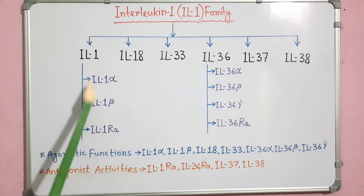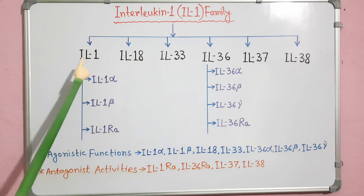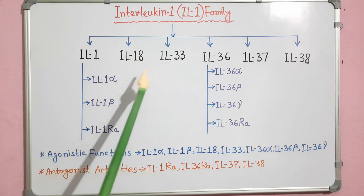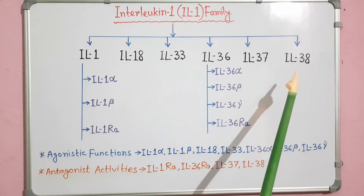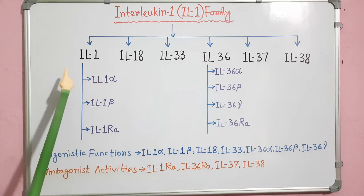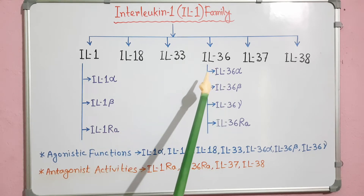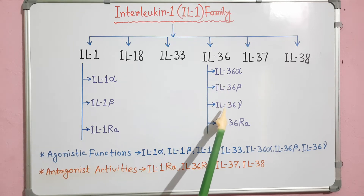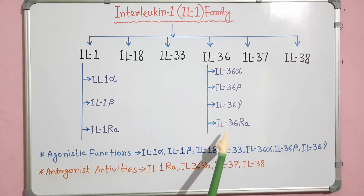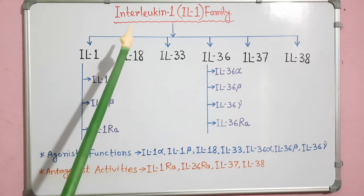Here I have shown different members under the IL-1 family. The main members are IL-1, IL-18, IL-33, IL-36, IL-37 and IL-38. IL-1 has 3 cytokines: IL-1 alpha, IL-1 beta, and IL-1RA. IL-36 has 4 cytokines: IL-36 alpha, IL-36 beta, IL-36 gamma and IL-36RA. So, there are a total of 11 members under the IL-1 family.